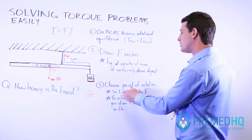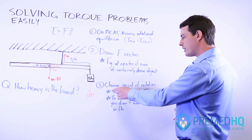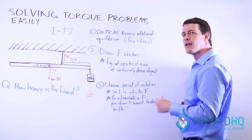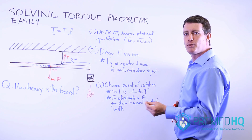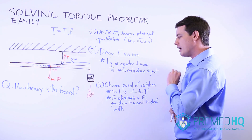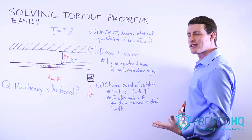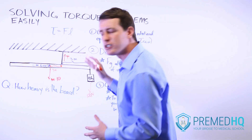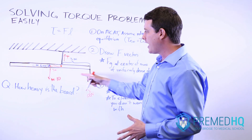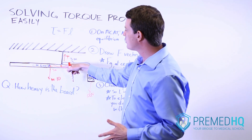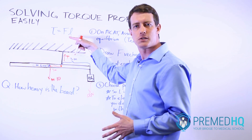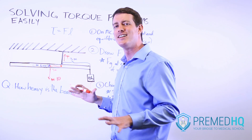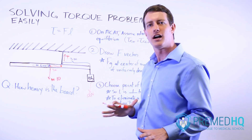The third rule is to choose your point of rotation so the lever arm is perpendicular to the force, but also to place it at a point that allows you to ignore a force you don't want to deal with. So we'll choose this point of rotation right at the rope, because now the lever arm between this point and where the tension force acts will be zero — so we don't have to calculate that torque anymore. That makes our lives a lot simpler.